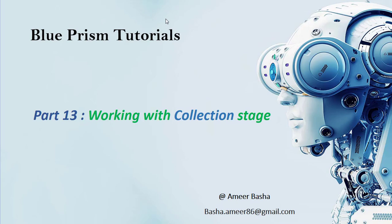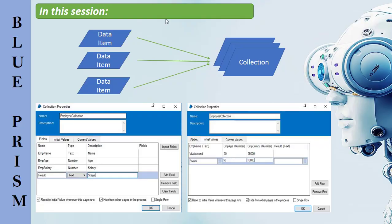Welcome to Blue Prism Tutorials. My name is Amir. This is Part 13: working with the collection stage. In this session, we will learn how to store values in a collection stage. In previous sessions, data items we used acted as containers to hold single values, but there is also a way to hold multiple pieces of data together. A collection is a type of data item that can hold multiple values arranged like a table with columns and rows, similar to an Excel spreadsheet.